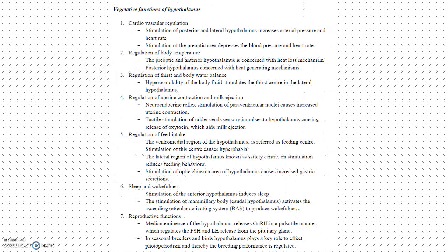These are the vegetative functions. The first one is cardiovascular regulation — stimulation of the posterior and lateral hypothalamus will increase the arterial pressure and heart rate. Next: regulation of body temperature, regulation of fluid and water body balance, uterine contraction, milk ejection, regulation of feed intake, sleep-wake cycle, and reproductive functions. We have to get these seven things in our mind.